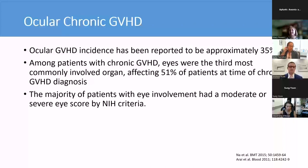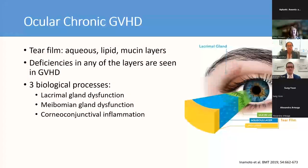Let's first talk about ocular graft-versus-host disease. Eye chronic GVHD has been reported to affect approximately 35% of transplant recipients. Among those with chronic GVHD, the eyes have been reported to be the third most common organ involved, affecting half of patients at the time of GVHD diagnosis, and often these patients are already presenting with moderate or severe eye scores by NIH criteria. The tear film is really composed of three layers, and deficiencies in any of these layers are seen in patients with chronic GVHD.